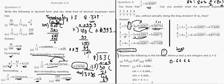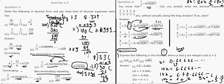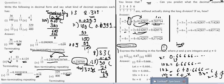For 0.6̄ = 0.6666... let x = 0.6666... Since there is a single repeating term after the decimal, multiply by 10: 10x = 6.6666... We can write 6.6666 as 6 + 0.6666, and 0.6666 is just x again. So 10x = 6 + x, giving 9x = 6, so x = 6/9 = 2/3. The answer is 2/3.